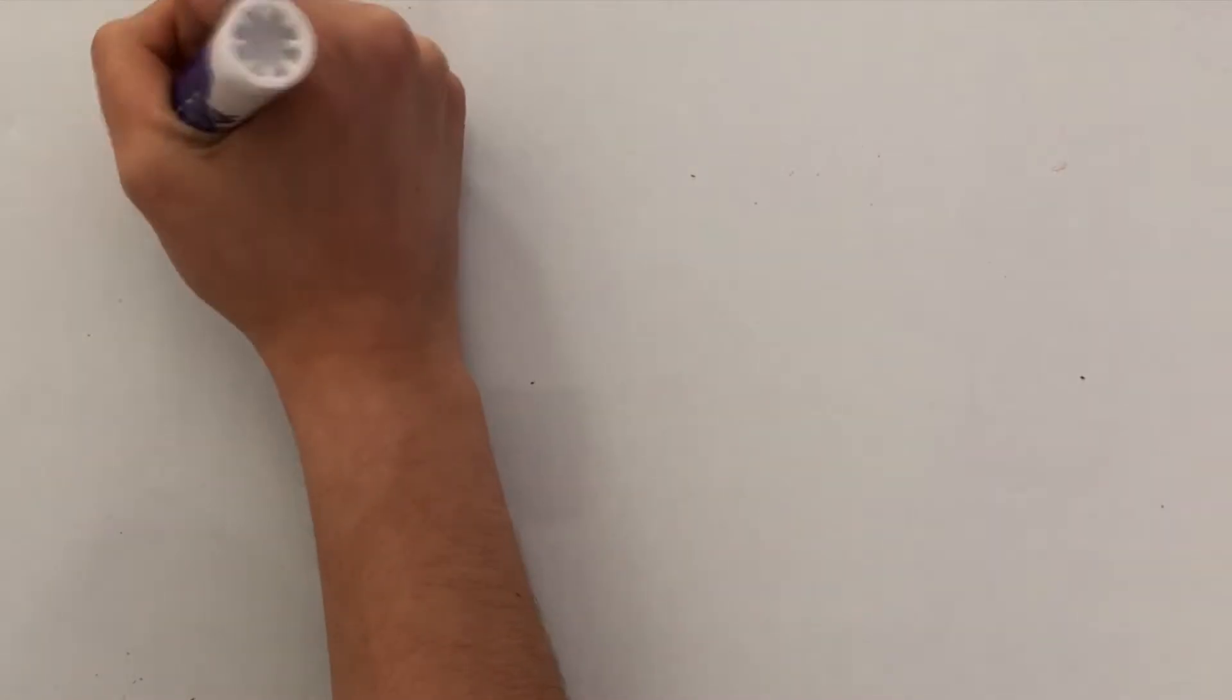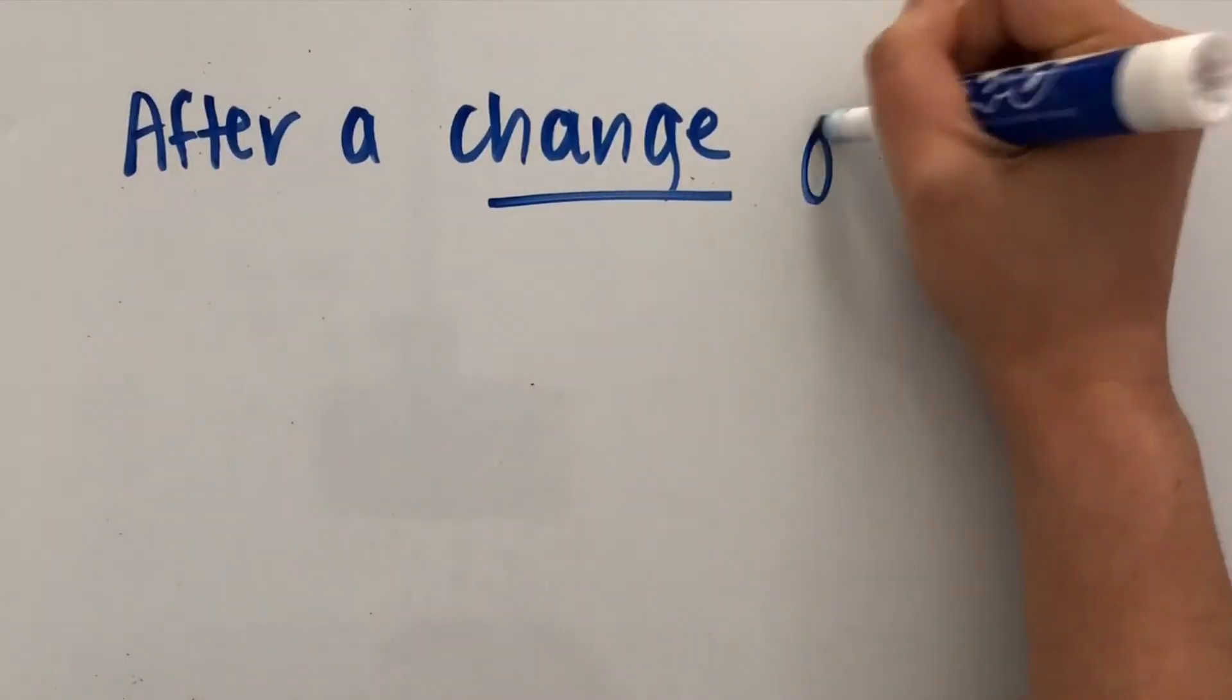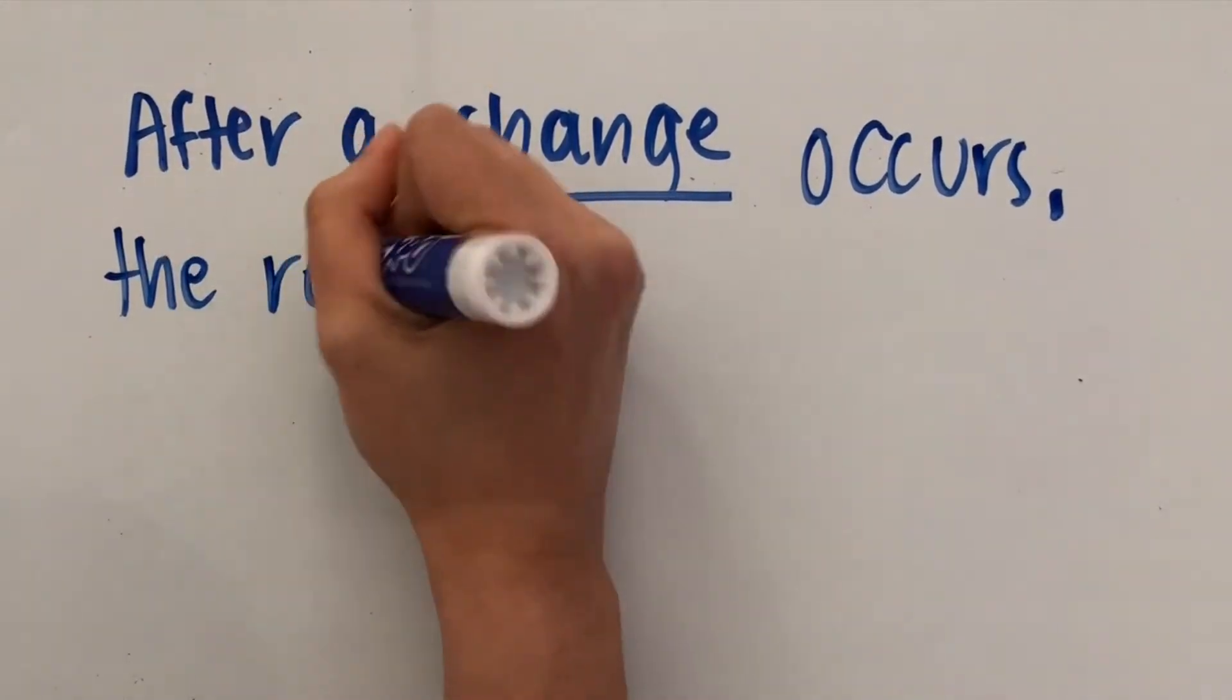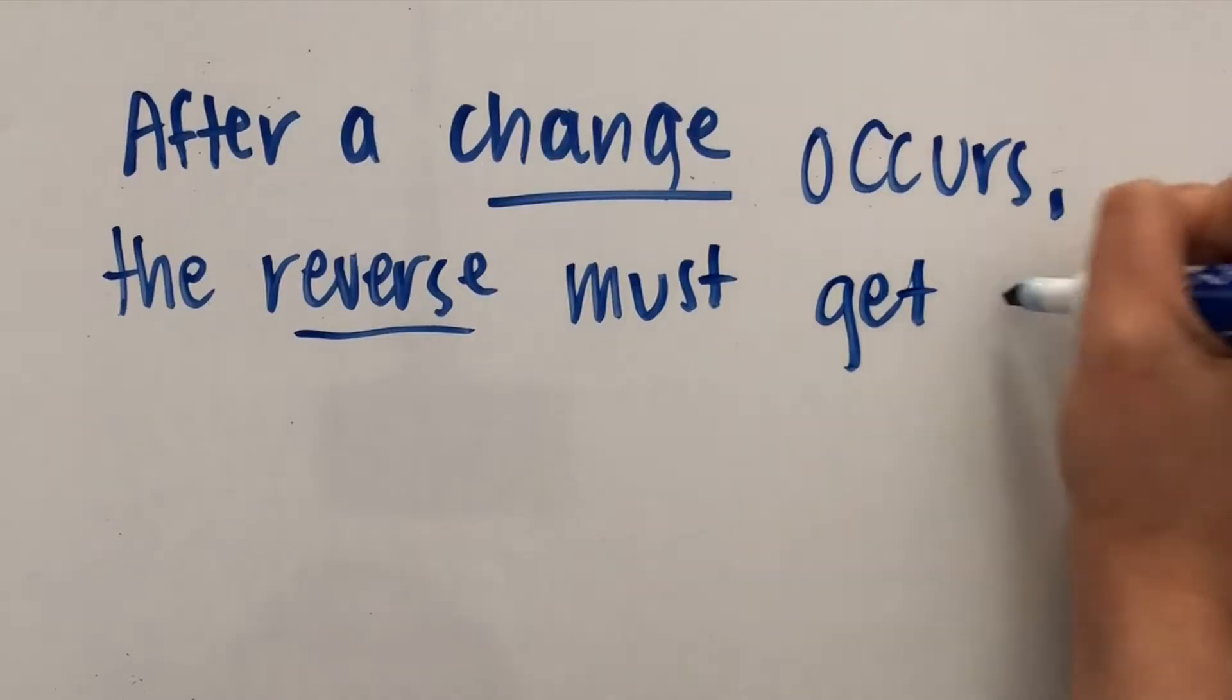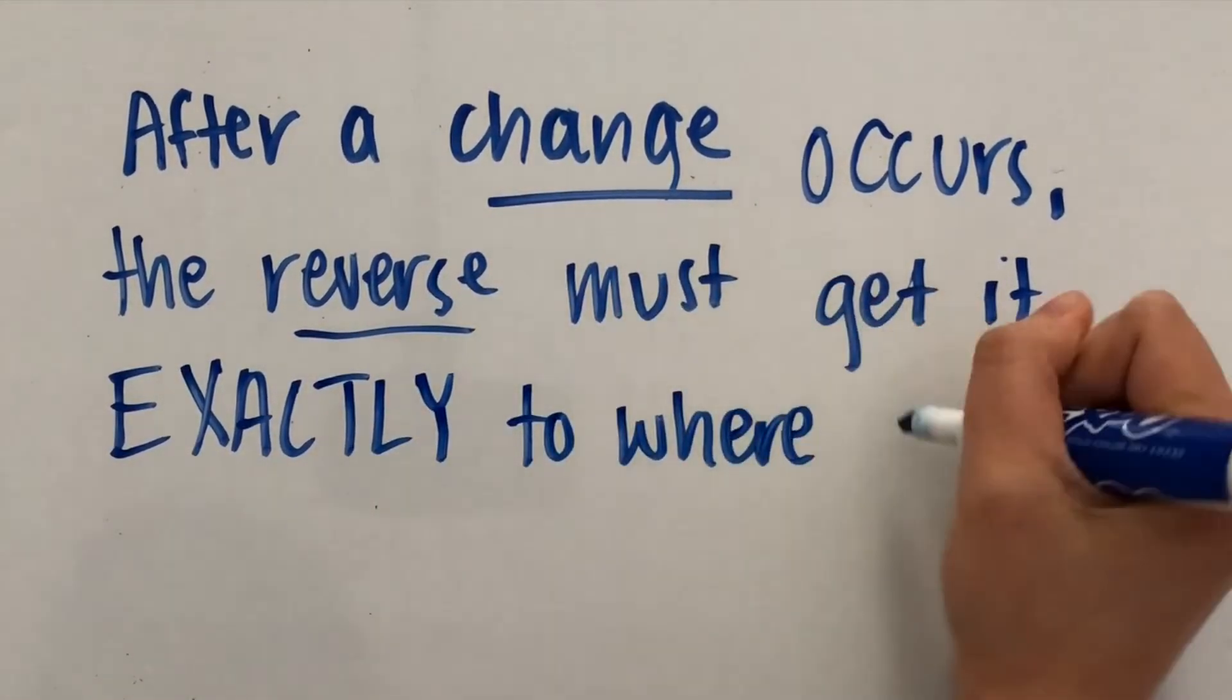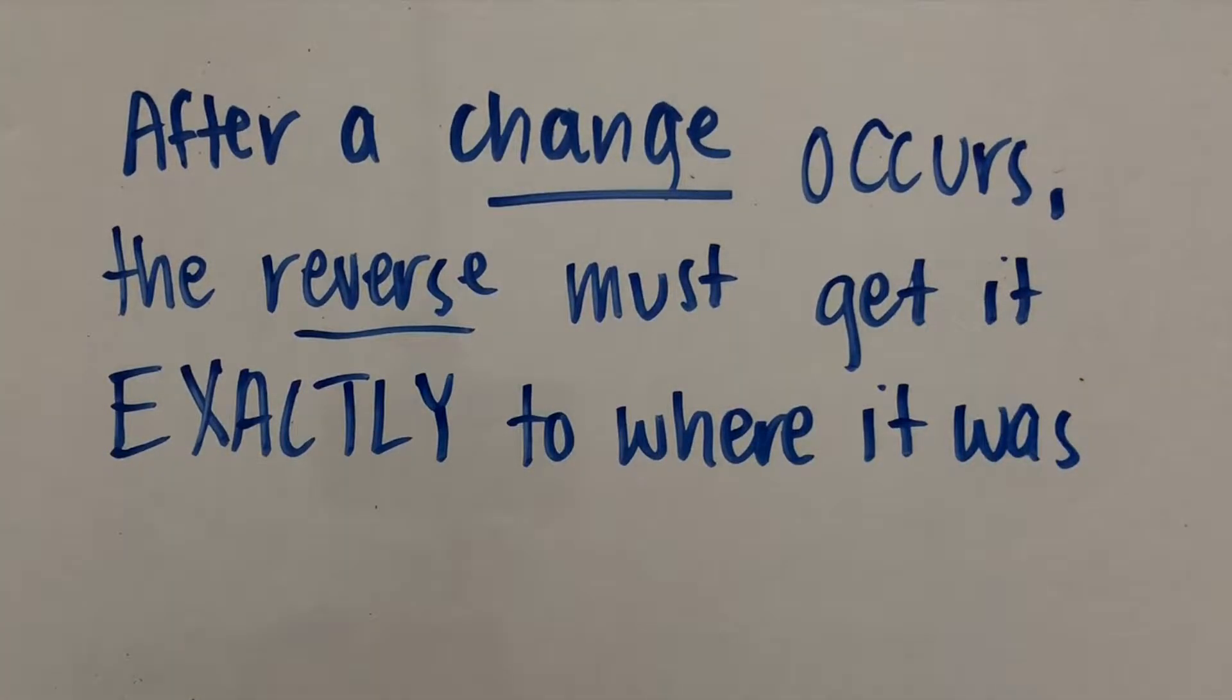After a thermodynamic process occurs, changing a variable such as temperature, pressure, or another state function to get a system from an initial state to a final state, then the reverse of this would get it exactly to where it was before, with no change in the universe.